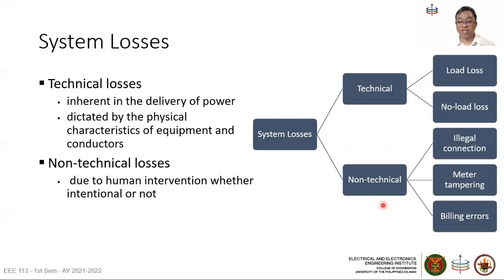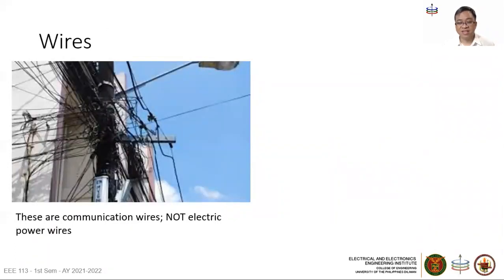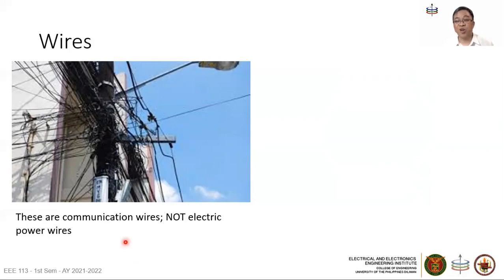Non-technical losses are due to human activities, whether deliberate or not. Electricity theft via jumpers or meter tampering is done by some. There could also be errors in billing, meter reading, and record keeping — most unintentional, but some intentional. The so-called 'spaghetti wires' — when raised in a House committee meeting on system losses — were actually communication lines, not power lines. The congressman could not understand the difference.